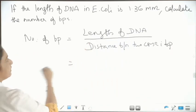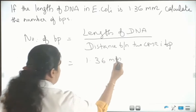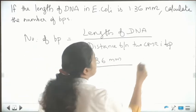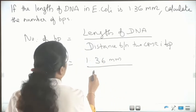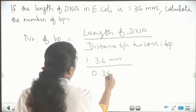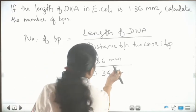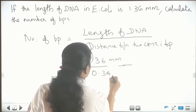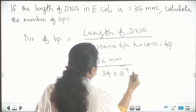So what is the length of the DNA here? 1.36 millimeter. And what is the distance between two consecutive base pairs? That is a unique number: 0.34 into 10 raised to minus 9 meter.